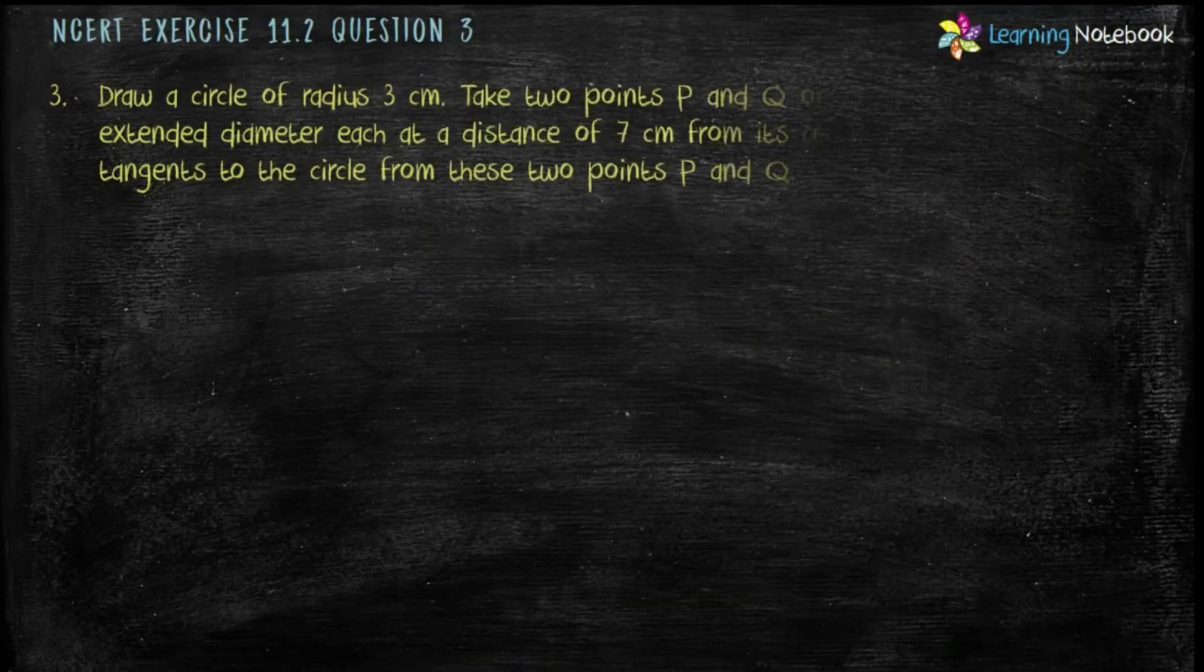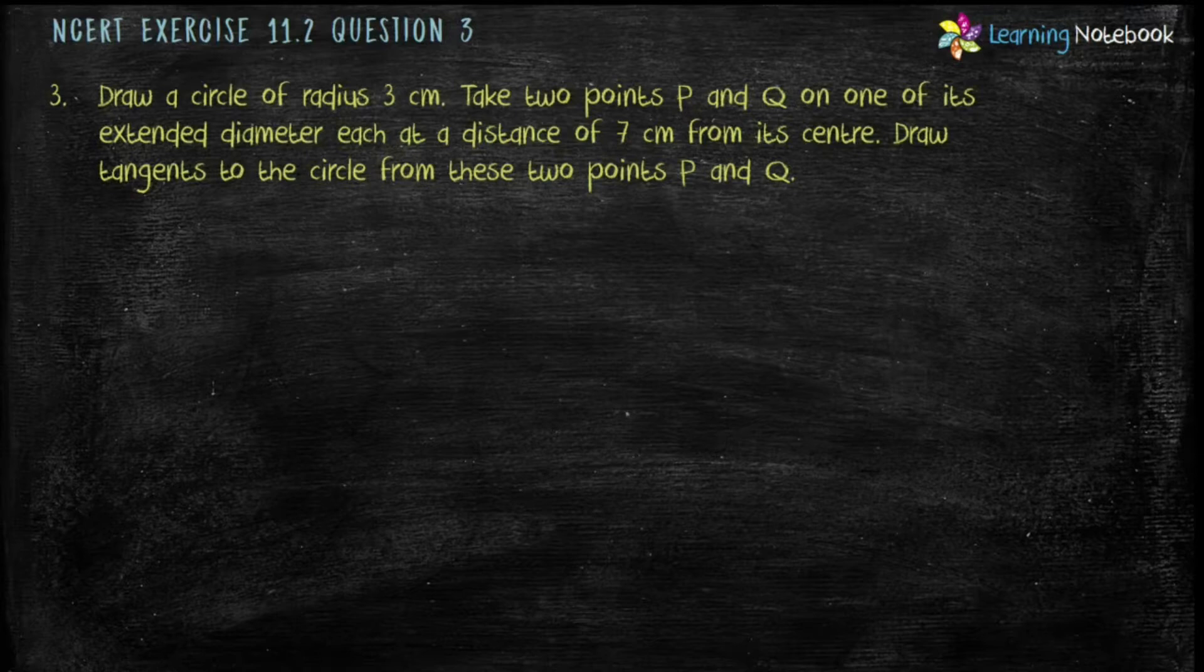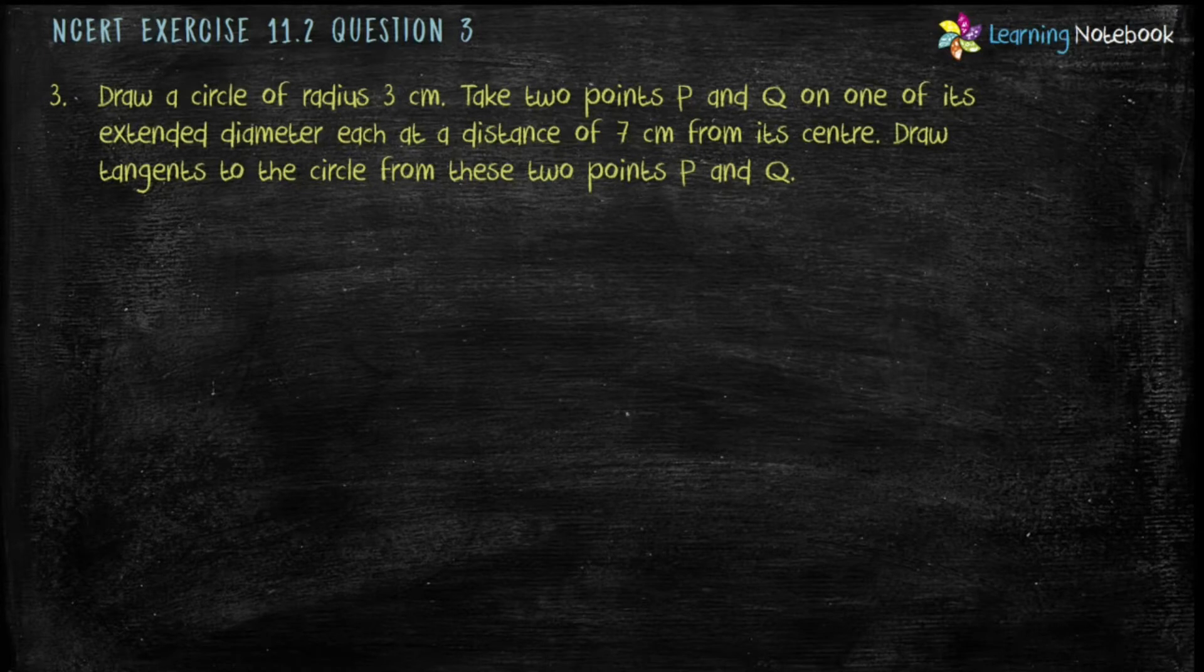Question is, draw a circle of radius 3 cm. Take two points P and Q on one of its extended diameter each at a distance of 7 cm from its center. Draw tangents to the circle from these two points P and Q.